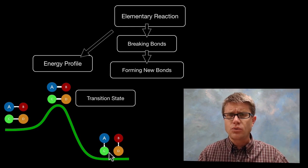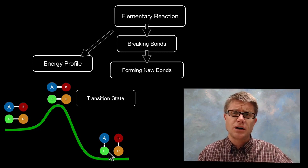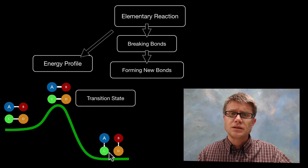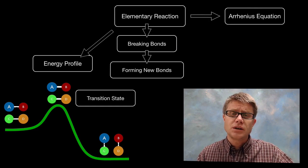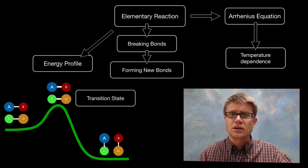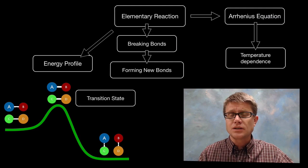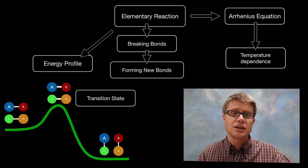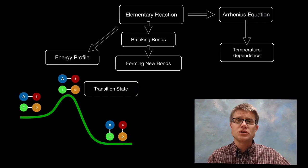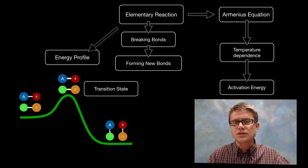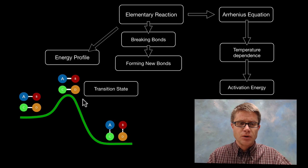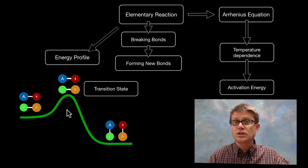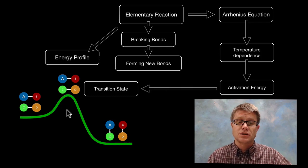What we really have to do is start to weaken those bonds, and one way we can do that is to change the temperature. According to the Arrhenius equation, the rate constant in an equation is based on the temperature. The higher the temperature, the faster the molecules are moving, and the more likely we are to hit the activation energy — the amount of energy required to reach that transition state.